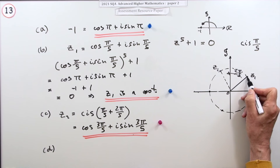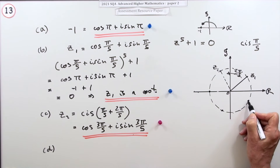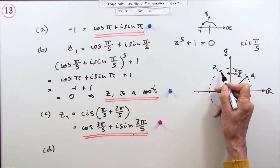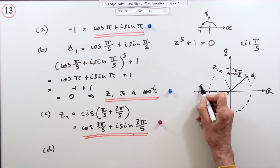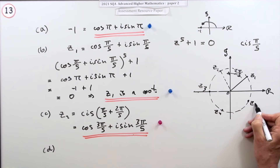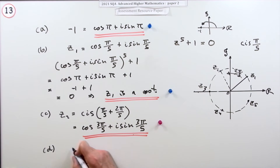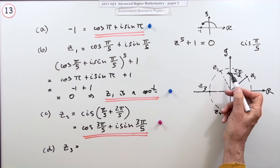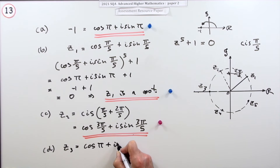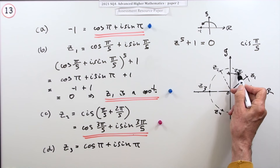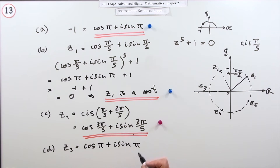If one value is a root then the one directly below it — same real part, opposite imaginary part — is also a root. So adding z3 from k=2: cos π + i sin π, which adds another 2π/5 onto 3π/5, giving five-fifths, so that's cos π + i sin π.